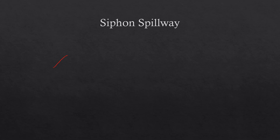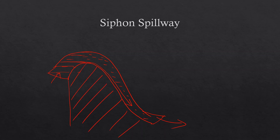Next is the siphon spillway, which operates on the principle of a siphon. Water enters through the mouth of the spillway, and as the water level rises to a certain level it begins to discharge to the downstream. When the entire spillway — which has a roof — becomes full, it acts like a siphon pipe and operates at maximum capacity. It continues discharging even as the reservoir level drops, stopping only when the entry opening is exposed to the atmosphere.